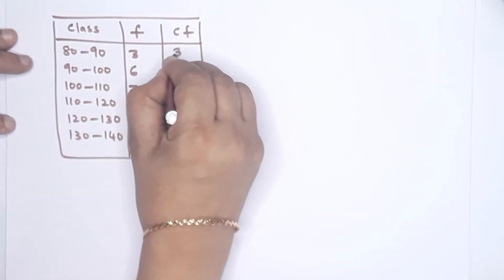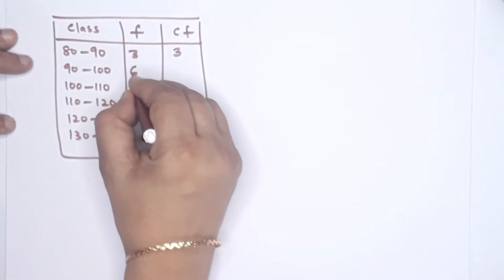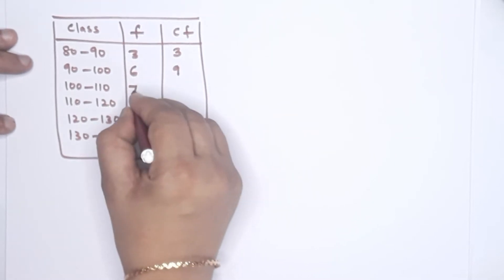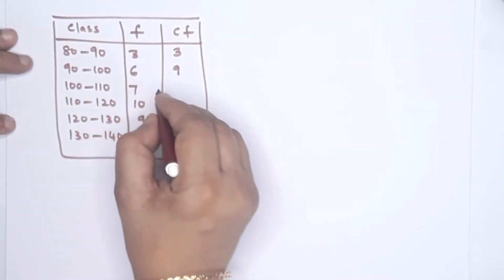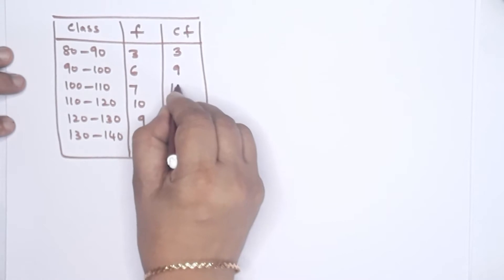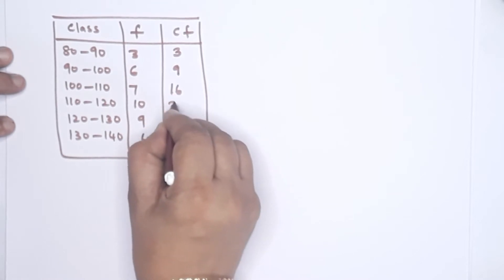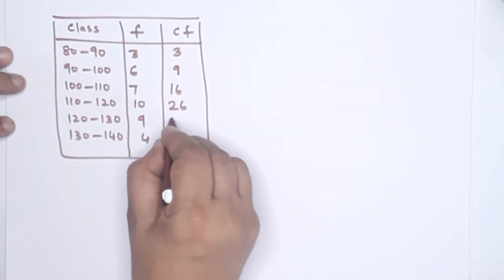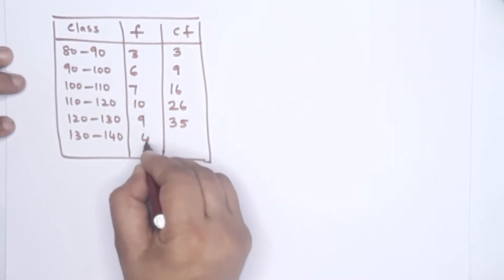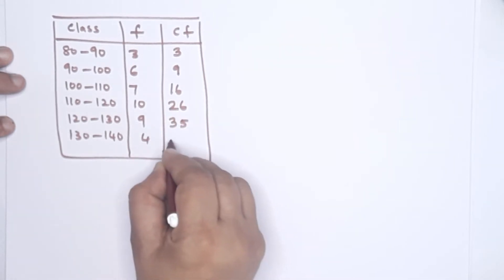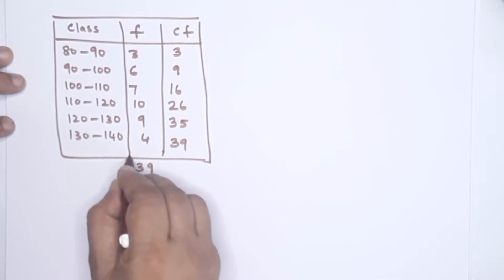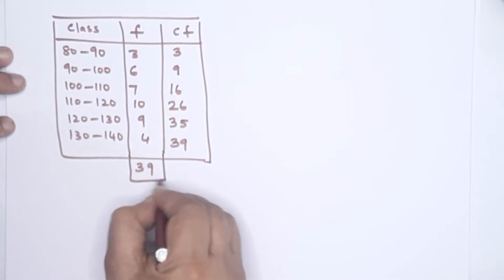The cumulative frequency is added: 3, then add 6 gives 9, then add 7 gives 16, then add 10 gives 26, then add 9 gives 35, then add 4 gives 39. The total frequency you add is 39.